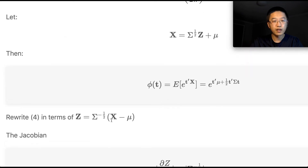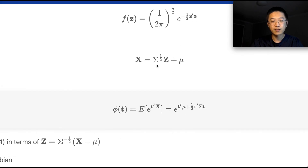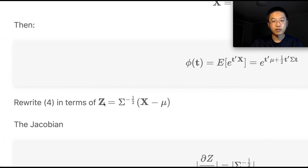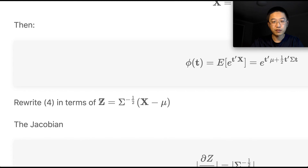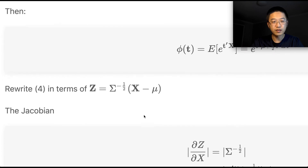Now let's rewrite x. Since x is a linear function of z, let's invert it. We get that z equals the inverse square root of sigma times the bracket (x minus mu). So this is our expression for z.